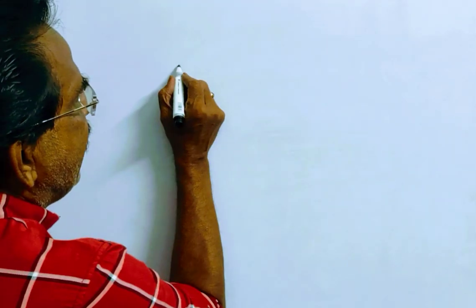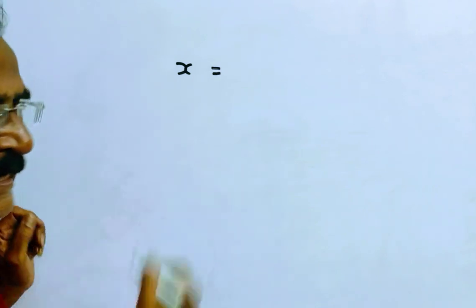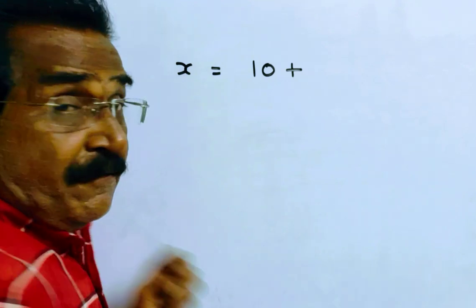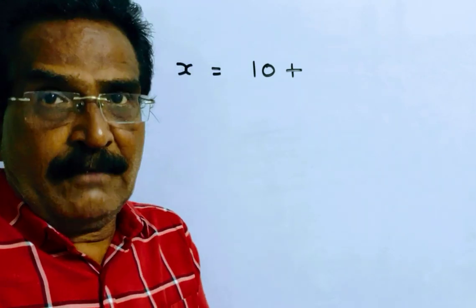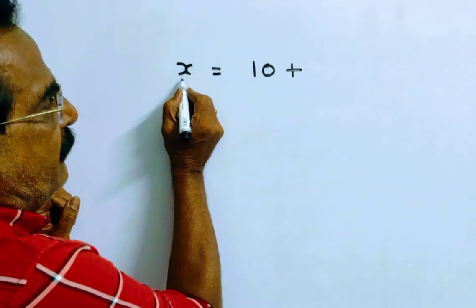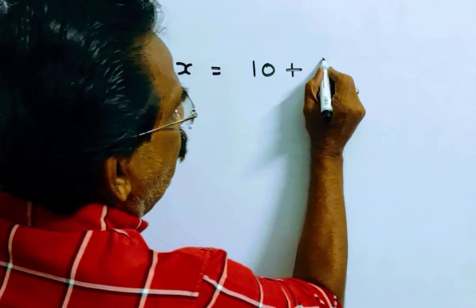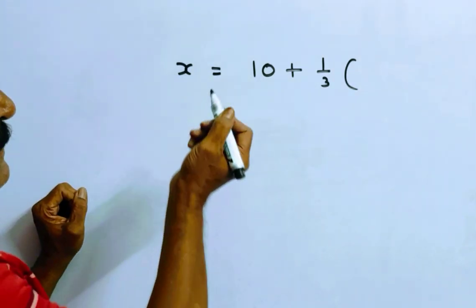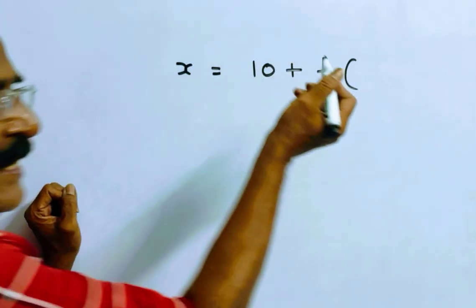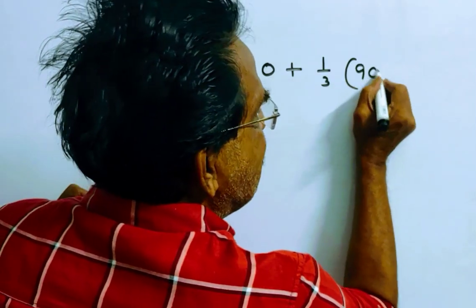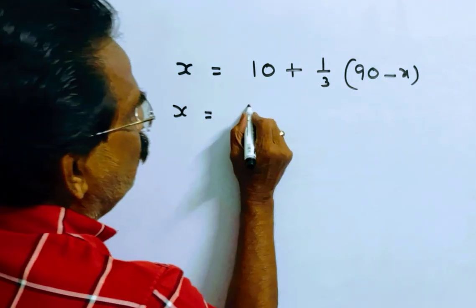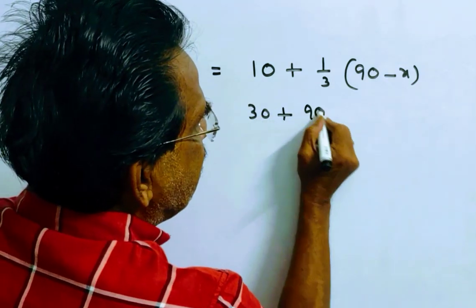Our question is: what is the greater angle? Let an angle be x. Since the angles are complementary, the other angle is 90 minus x. The condition states x is equal to 10 plus (90 minus x) over 3.